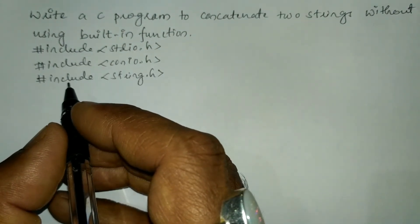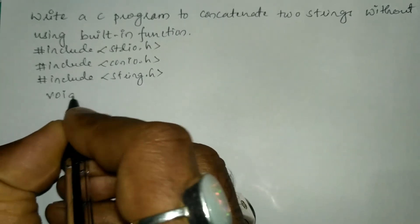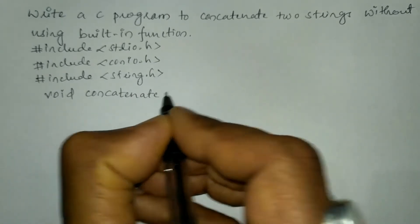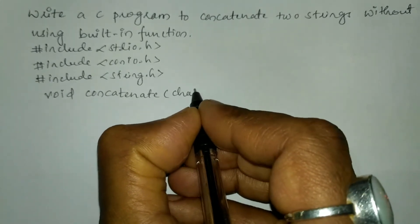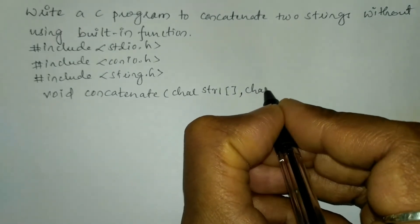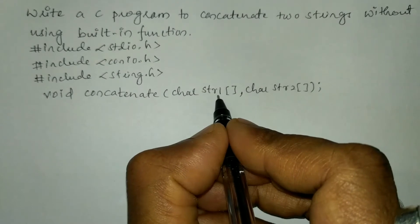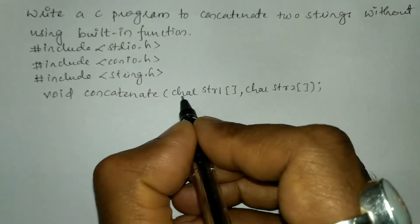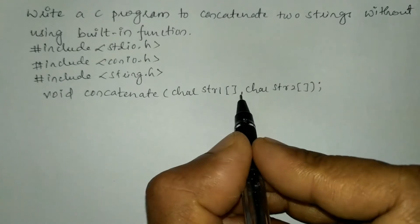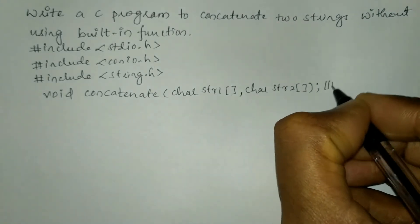Now let us declare the function prototype. The return type is void and the name of the function is concatenate. Then we write char type str1 of any size, comma, char str2 of any size, and then put a semicolon. These are one-dimensional arrays of characters. Concatenation means combining two strings together — the second string will come and join at the end of the first string.